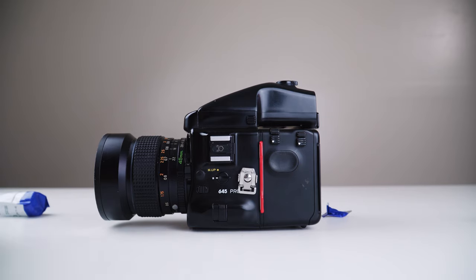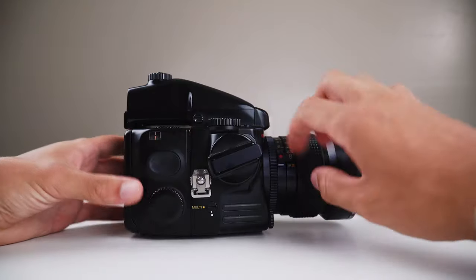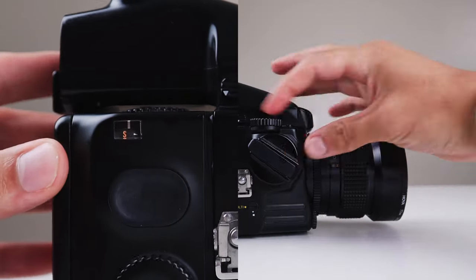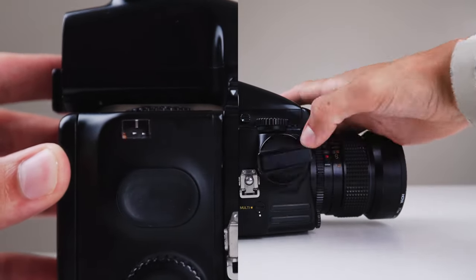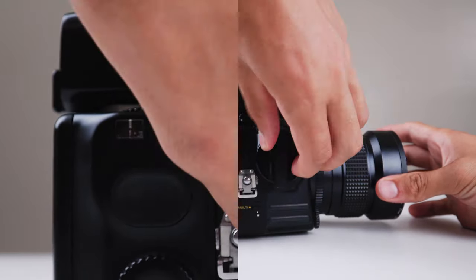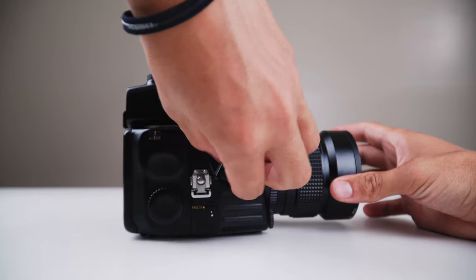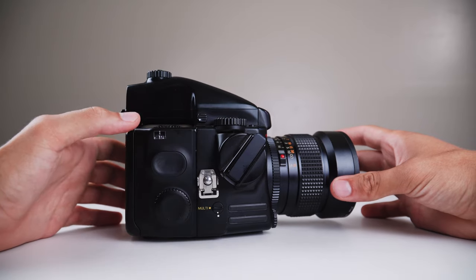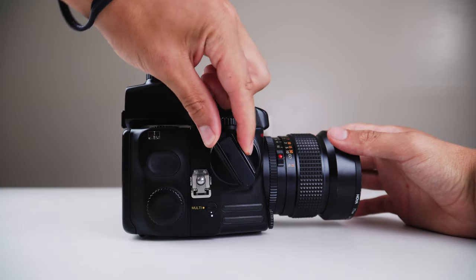The last thing we have to do is wind the film so it's ready for its first exposure. There will be a little window that shows what photo you're on. It should be on an S right now. Keep spinning the film until this S changes to a 1 and you hear a click. Once you get to 1, it should lock in place and you shouldn't be able to spin it in either direction.